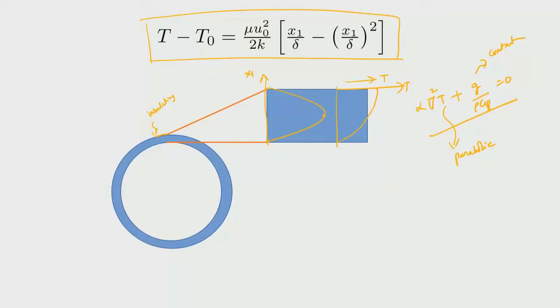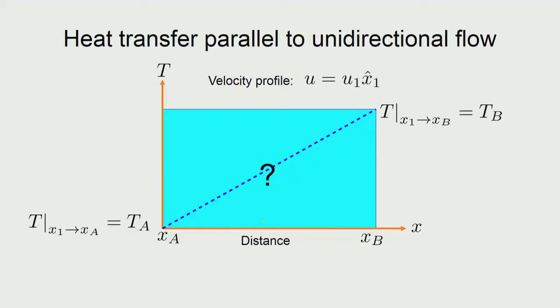Now let us examine what happens when fluid flow is parallel — rather than normal — to the direction of heat transfer. Here the flow is along the x₁ direction, so heat transfer is also in the same direction. We want to inspect the temperature profile T as a function of x, and our expectation is that it may not be a straight line.